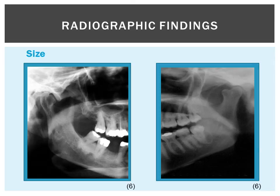These images show some variations in size. The condyle on the left shows a splitting closer to the neck of the condyle, and the condyle on the right shows just a small cleft in the condyle.